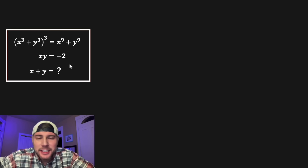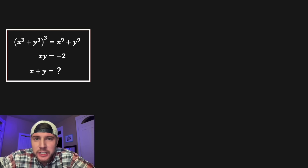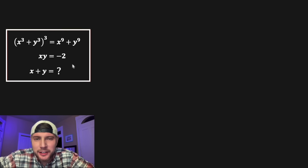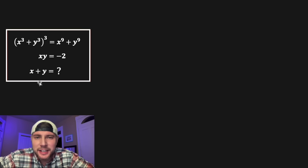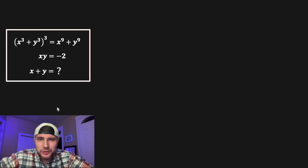This looks like a fun one. We're given that (x³ + y³)³ equals x⁹ + y⁹, and we're also given that x times y equals negative two. We want to find out what x plus y is.